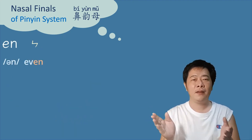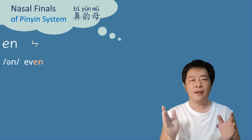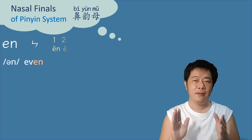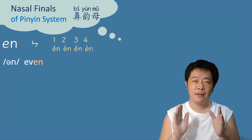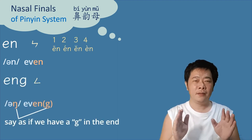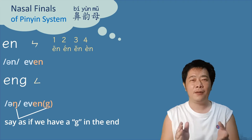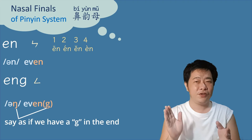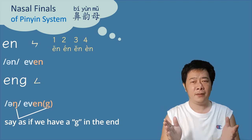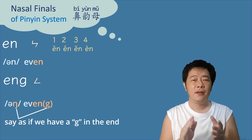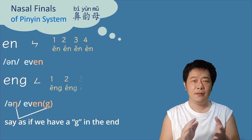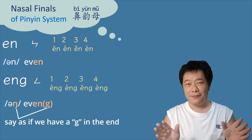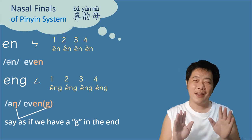恩 spelled E-N (en) sounds like the 'en' in 'even.' For tones: ēn, én, ěn, èn. For 恩 spelled E-N-G (eng), we can pretend there is an invisible G there: ēng, éng, ěng, èng. Still not too much difference? Yeah, it doesn't have to be.